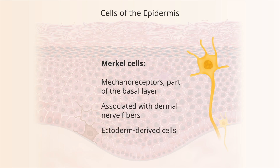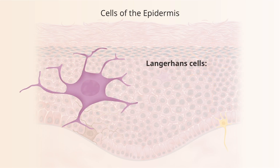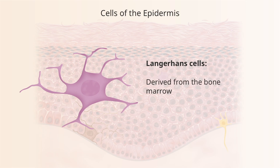The Langerhans cell is important for immune surveillance. Its cytoplasmic processes snake throughout the major layer of the skin, allowing it to sample for viruses, bacteria, and fungi, and send signals down into lymphatics, which eventually reach the lymph nodes. Because of that immune surveillance role, Langerhans cells are derived from the bone marrow and have a very important immunologic function.